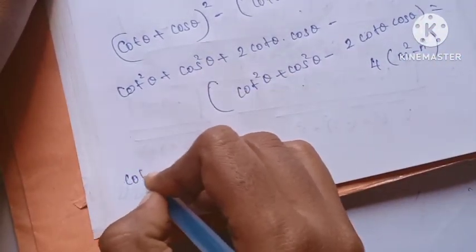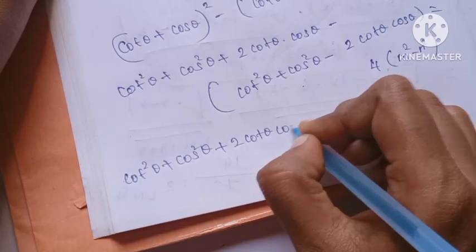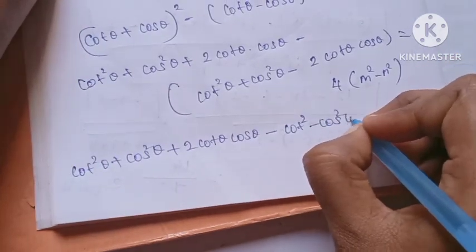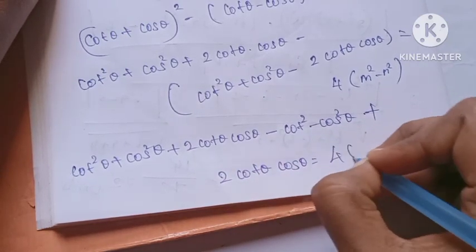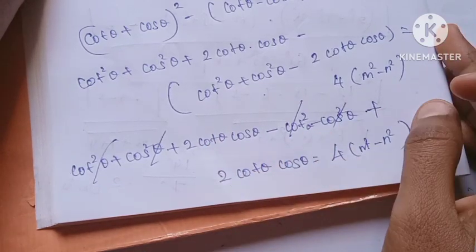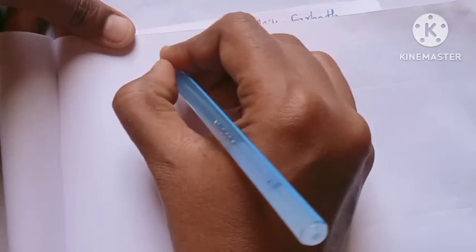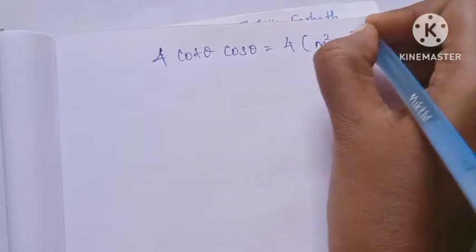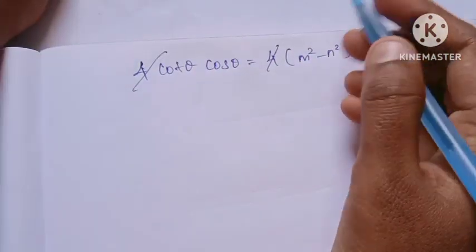Expanding fully: cos squared theta plus cos squared theta plus 2 cos theta sin theta, minus cos squared theta minus cos squared theta plus 2 cos theta sin theta is equal to 4m squared minus 4n squared. The cos squared theta terms cancel.